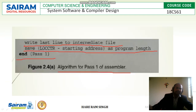Next step: we should write the last line to the intermediate file, which will be processed by the pass2 algorithm, and save the location counter value as the program length. This is how the pass1 algorithm works.